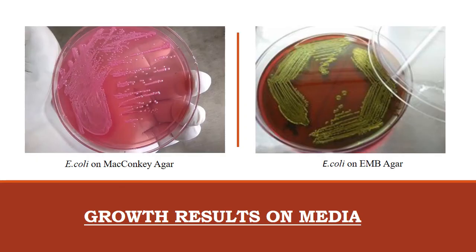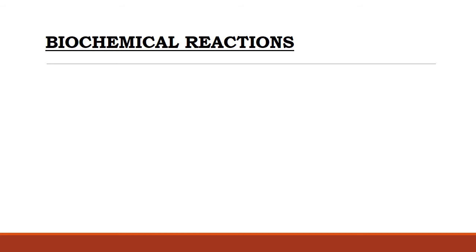These are the growth results of E. coli on MacConkey agar and EMB agar — both are selective and differential media. E. coli is a lactose-fermenting bacteria and grows pink on MacConkey agar due to the presence of neutral red dye, which is a pH indicator. On EMB agar, it produces a deep purple colony with a green metallic sheen due to strong acidity.